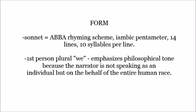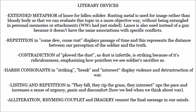Now let's look at the form of the poem. This poem is a sonnet, meaning it has an ABBA rhyming scheme, ten syllables per line written in iambic pentameter, and fourteen lines. Another thing related to form is the perspective it's written in — first person plural, 'we' — which emphasizes the philosophical tone because the narrator is speaking not as an individual but for the entire human race.